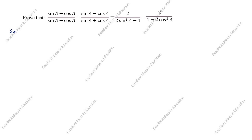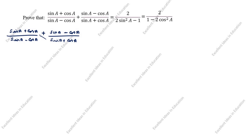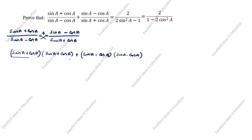What is given? Sin a plus cos a divided by sin a minus cos a, plus sin a minus cos a divided by sin a plus cos a. Cross this and this. Next, sin a plus cos a — bring it to this side: sin a plus cos a plus sin a minus cos a. Bring this one to this side: sin a minus cos a, divided by sin a minus cos a into sin a plus cos a.